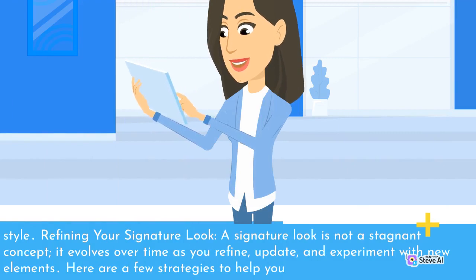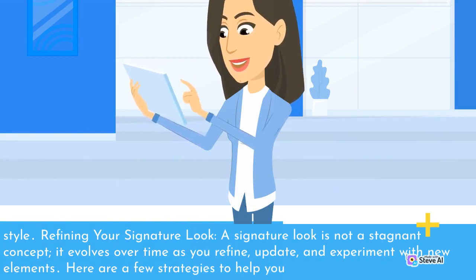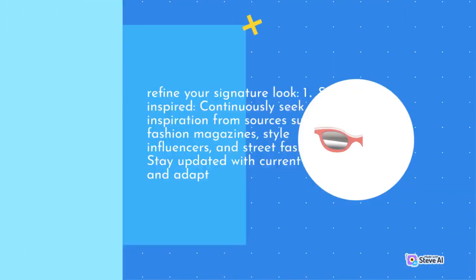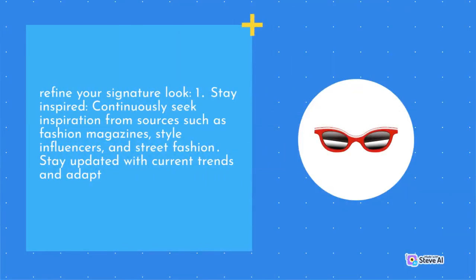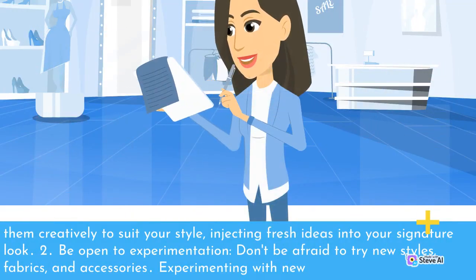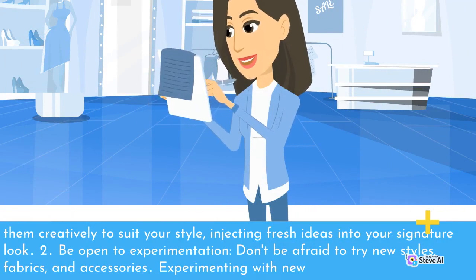Refining your signature look. A signature look is not a stagnant concept — it evolves over time as you refine, update, and experiment with new elements. Tip 1: Stay inspired. Continuously seek inspiration from sources such as fashion magazines, style influencers, and street fashion. Stay updated with current trends and adapt them creatively to suit your style, injecting fresh ideas into your signature look.